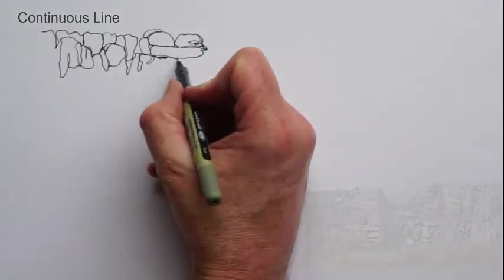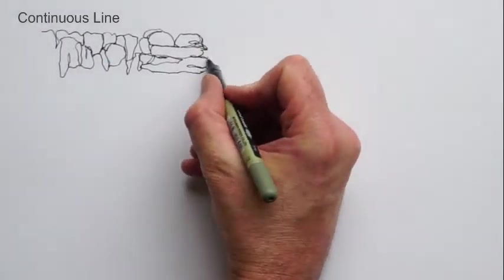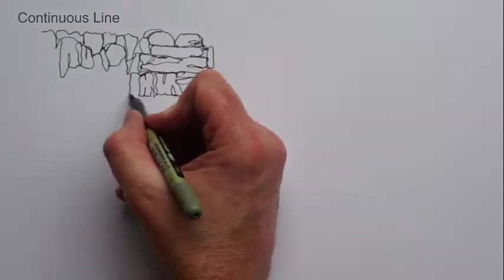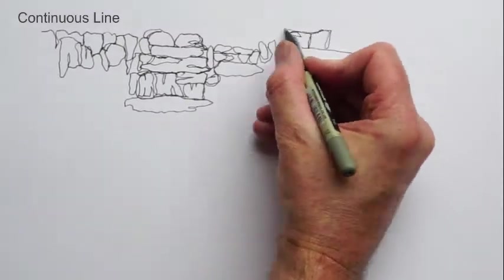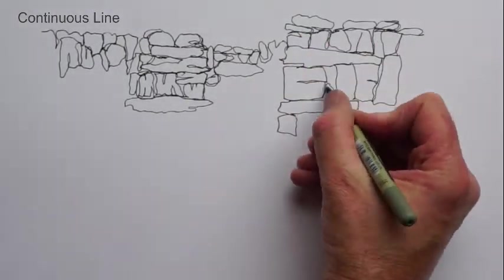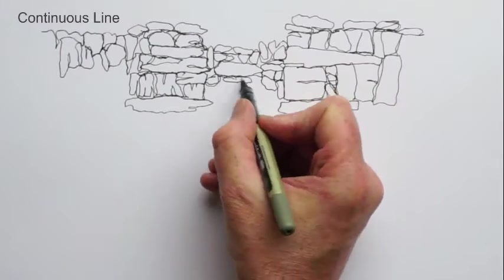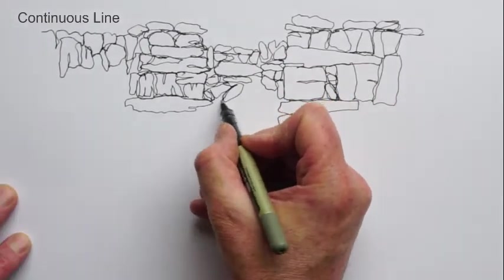And you trace and retrace over sections. And what emerges is a kind of very cohesive pattern. So everything is connected to everything else because it's the one continuous line, and it creates a lovely cohesiveness to the whole.